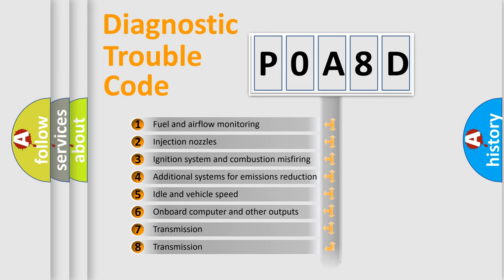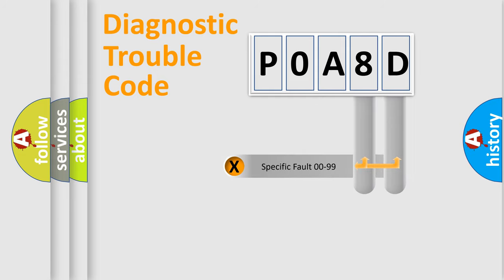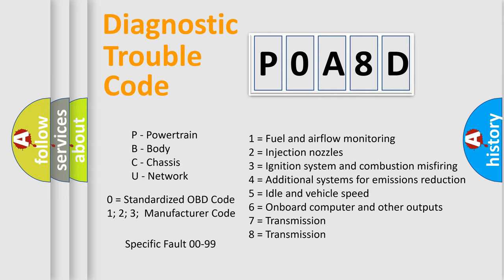The distribution shown is valid only for the standardized DTC code. Only the last two characters define the specific fault of the group. Let's not forget that such a division is valid only if the second character code is expressed by the number zero.